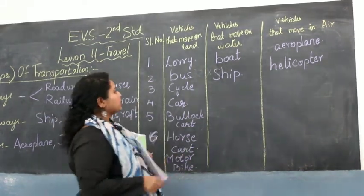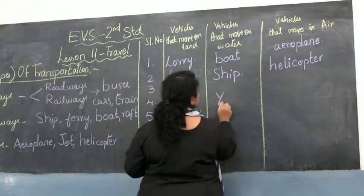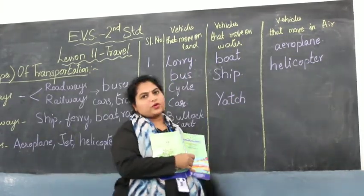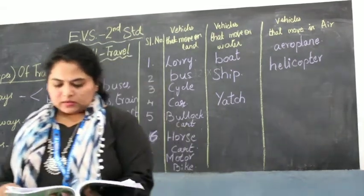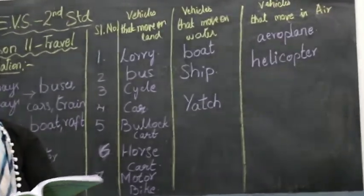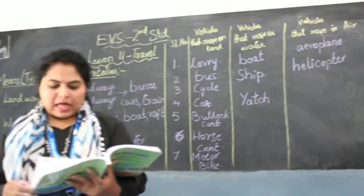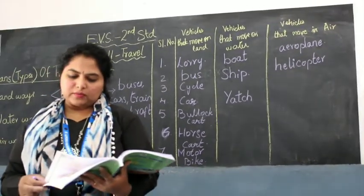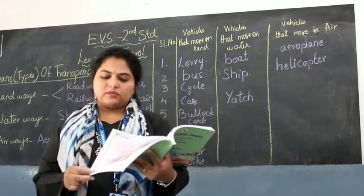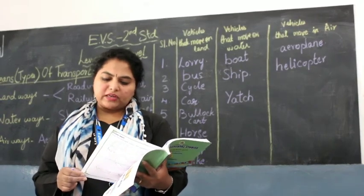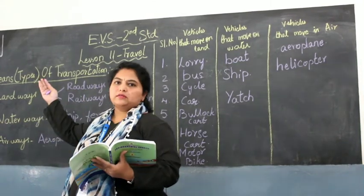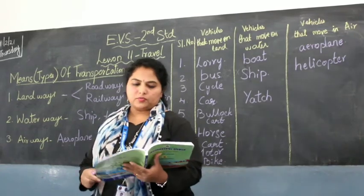Yacht is a water-moving vehicle — it moves on water and is an example of waterways. Copy all of this in the column provided in your textbook. To summarize: the system of vehicles that move on land is called land transport; vehicles that move on water is water transport; and vehicles that move in air is air transport — also called landways, waterways, and airways.